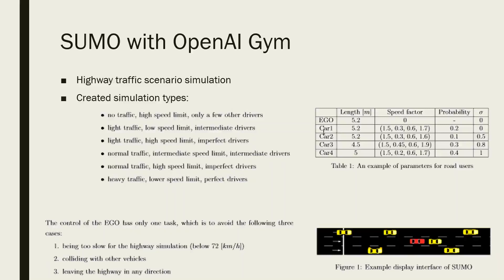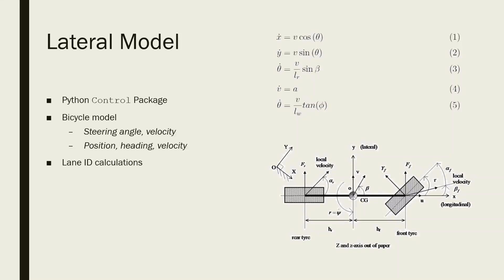SUMO does not support a lateral model or visualization of continuous lateral movement, so a lateral inner state representation was implemented that simulates vehicle dynamics simultaneously with SUMO. For the lateral model, the Python control library was used. The most simplified dynamic model is the 2 degree of freedom bicycle model. The model takes steering angle and velocity difference as input and, using a response function, returns the vehicle state consisting of XY position, heading, velocity, and direction of heading for every dt time step. The model also calculates the lane ID at any given time step needed for the SUMO solution.